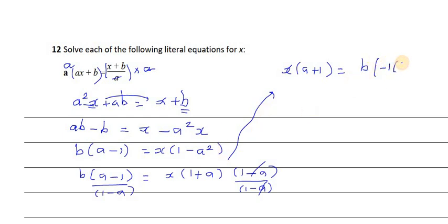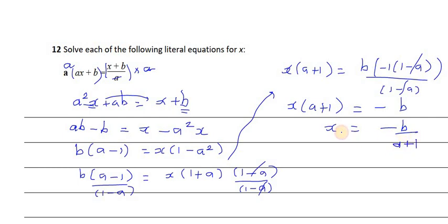b(1 - a) divided by (1 - a), so (1 - a) gets cancelled. You are left with x(a + 1) is equal to -b. So x would be -b over (a + 1), and this is the answer.